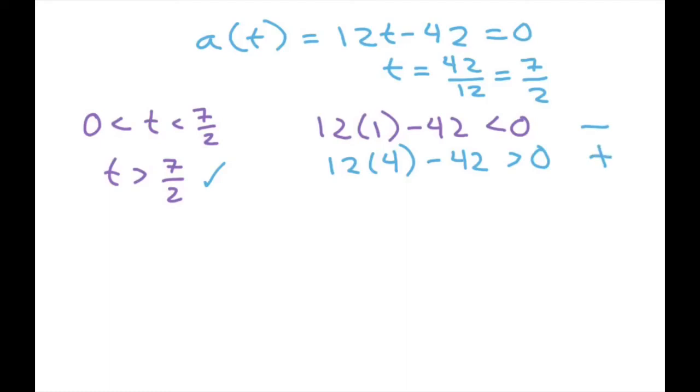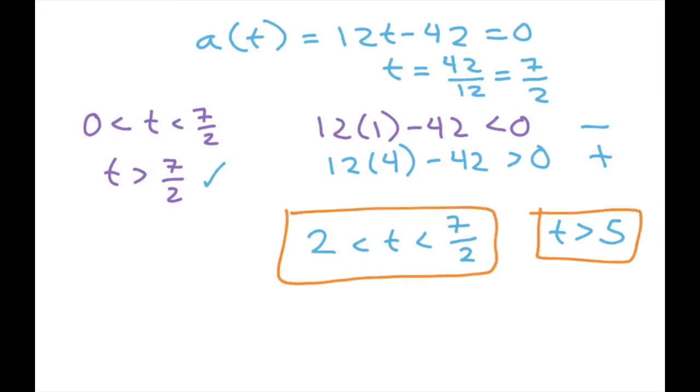So the intervals where the velocity and acceleration have the same sign are going to be between 2 and 7 over 2. All right. And also where t is greater than 5. So these are where they have the same signs. All right. So that's it. Thank you. Have a nice day. Bye-bye.